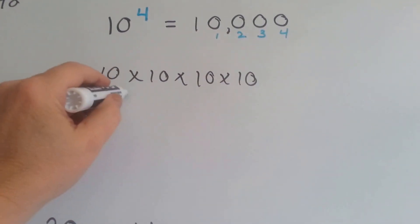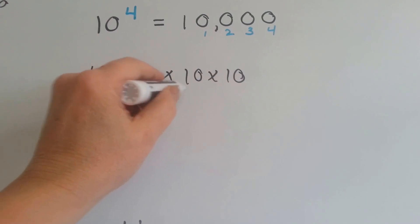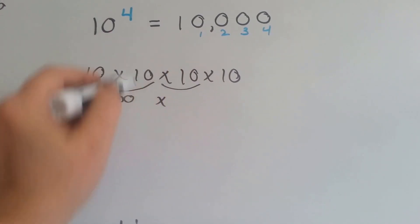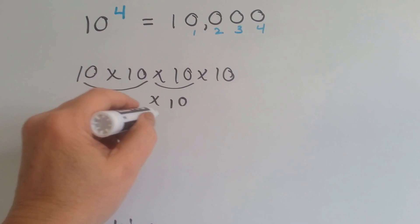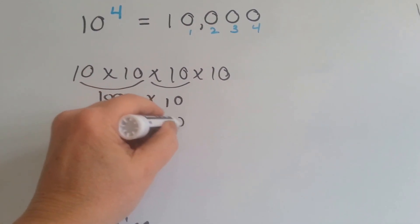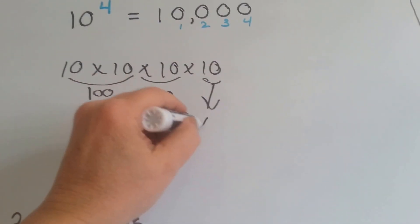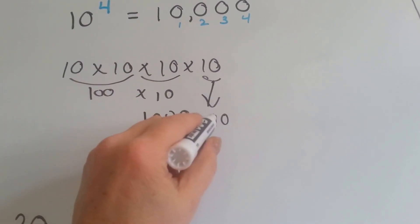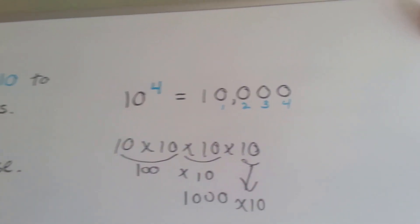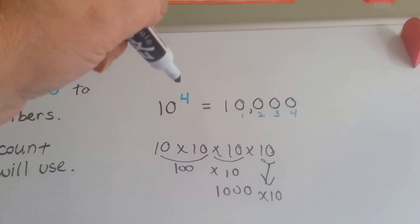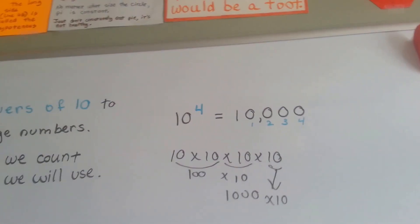10 times 10 is 100. If we multiply that by the next one, that's 100 times 10, which is 1,000. And then we multiply by the last one: 1,000 times 10 is 10,000. So whatever the exponent is — whatever the power of 10 is — tells you how many zeros to put.